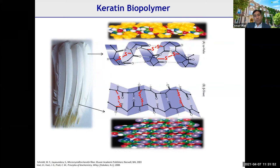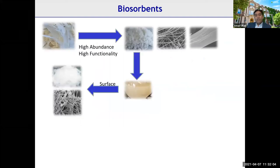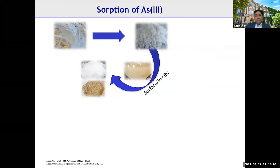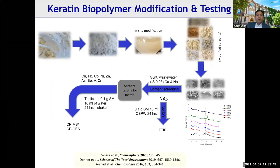Keratin from feathers is a cross-linked protein with a high percentage of cysteine residues. We ground it, modified it — either surface modification or in-situ — and dissolved it; the cross-linked keratin becomes unraveled and can be used for metal removal. For arsenic removal specifically (As³⁺, which is more toxic and difficult to remove), we achieved about 80% or higher removal at different pH values (4, 7, and 14).